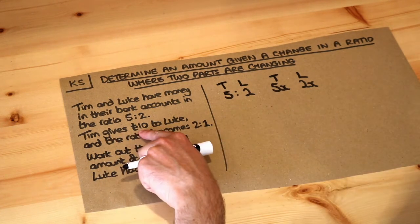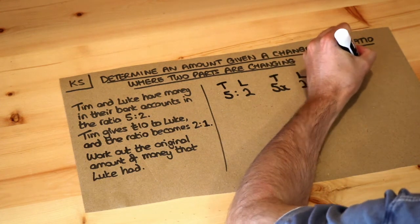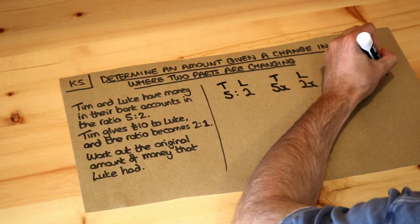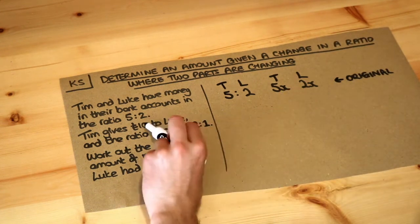Now we're then told that Tim gives 10 pounds to Luke. So that's the original amount that each person had.